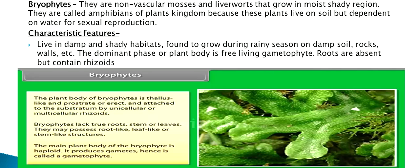Next is bryophytes. They are non-vascular mosses and liverworts that grow in moist, shady regions. They are called amphibians of the plant kingdom because these plants live on soil but are dependent on water for sexual reproduction. They live in damp and shady habitats, found to grow during rainy season on damp soil, rocks and walls. The dominant phase or plant body is the free-living gametophyte. Roots are absent but they contain rhizoids.